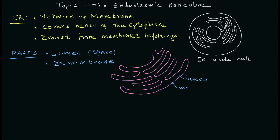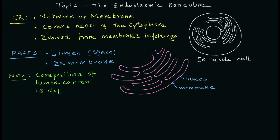As you can see in the drawing, the lumen is the space inside the endoplasmic reticulum, and the pink color lining is the membrane of the endoplasmic reticulum. An important note: the composition of the lumen content is different than the cytosolic content, because there are different kinds of processes running inside the ER, including a lot of protein synthesis.